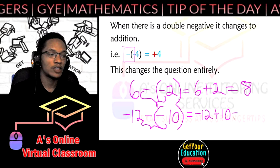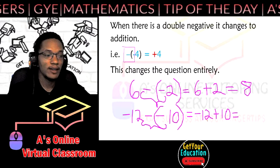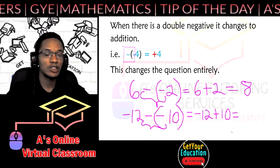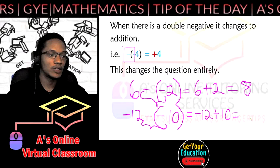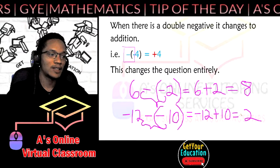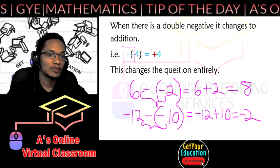And just like we saw last week, when we're adding now we're adding two integers and the signs are different. So we're going to subtract 12 take away 10 is 2 and put back the sign of the bigger number, negative 2.